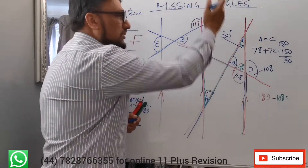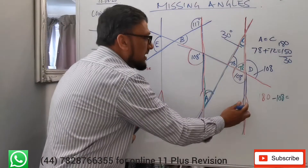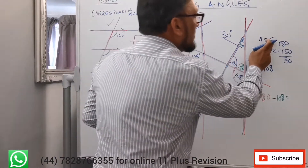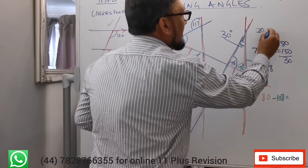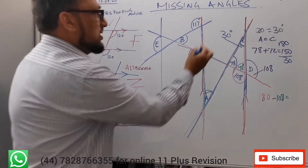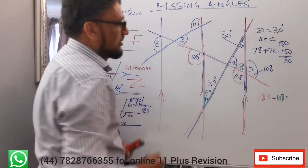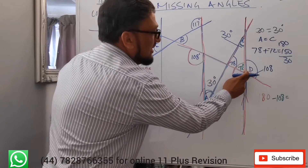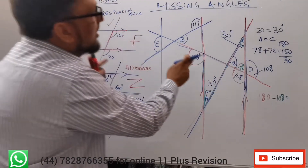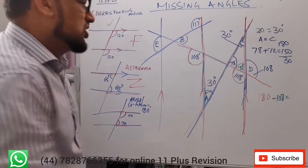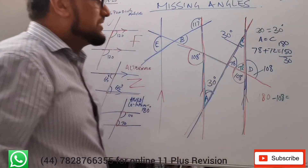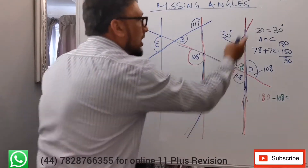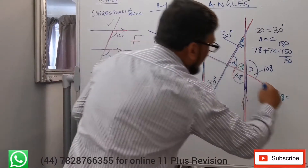As per the alternate angle property, A and C make the shape of Z, and A equals C. So since C is 30, A must also be 30. To summarize so far: angle A is 30, angle C is 30, and angle D — found by corresponding angles — is 108. Now we're going to extend to the third parallel line.